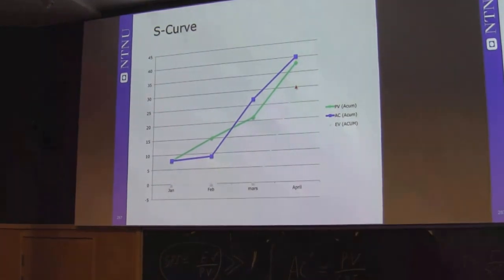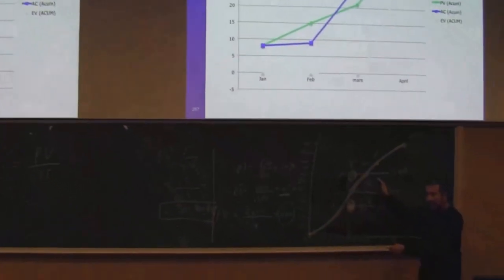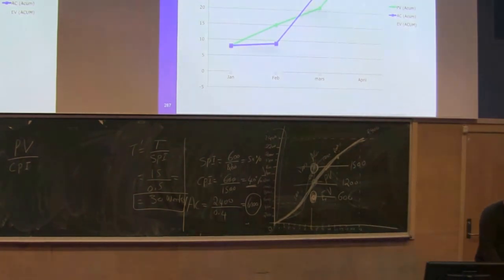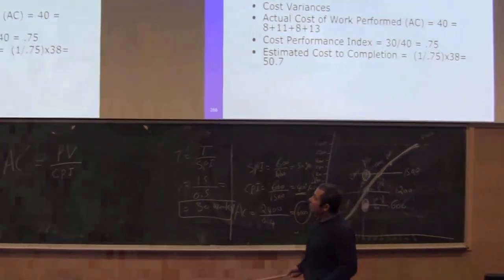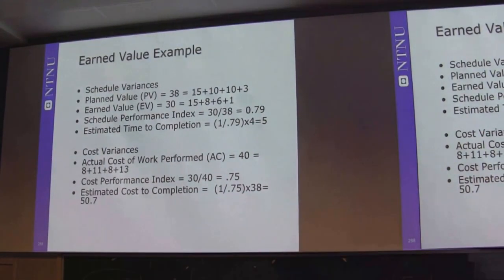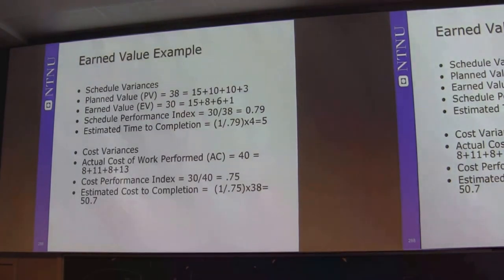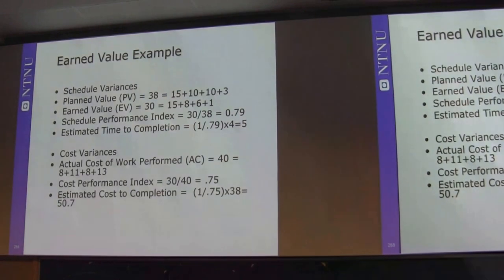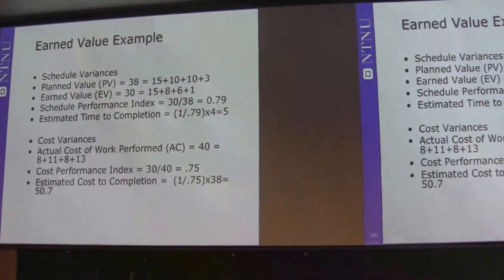This is very important if you want to learn earned value management. You build your S-curve, put in the values, calculate, make the trend — but you also have to explain that to your team. Here the schedule performance index SPI is around 80%, from which you can calculate you need about one more month. The cost performance index CPI is 75%, and calculating from that you need 50 units rather than 38 units, and it will take one more month.